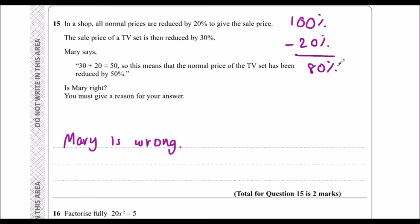Now, if you reduce the prices again, you're reducing it from 80 pounds, 80%. If it was 80 pounds, 80 divided by 10 is 8. 8 times 3 is 24. So 30% would be 24 pounds.